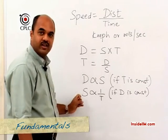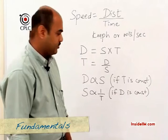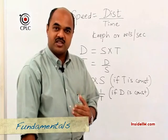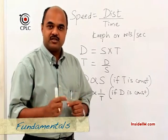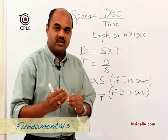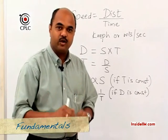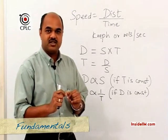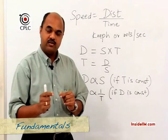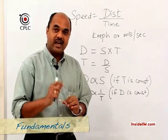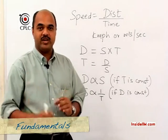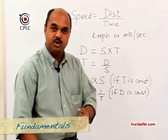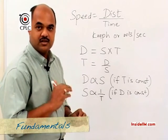This inverse relationship has important applications in problems. If the distance to be covered remains the same but the speed doubles, the time required automatically becomes half. More generally, if speed changes in the ratio a to b and distance remains constant, then time changes in the ratio b to a — the reciprocal of the speed ratio.